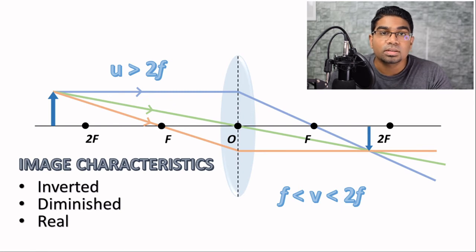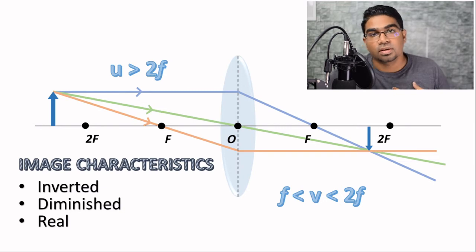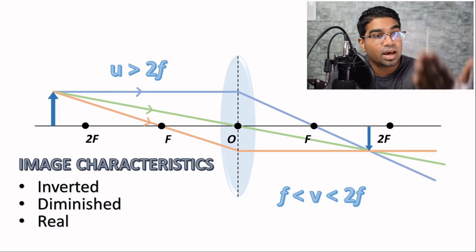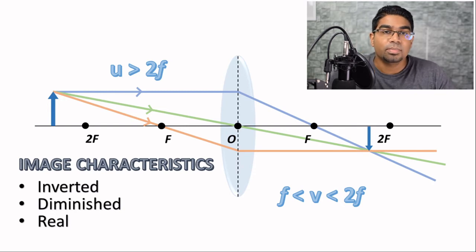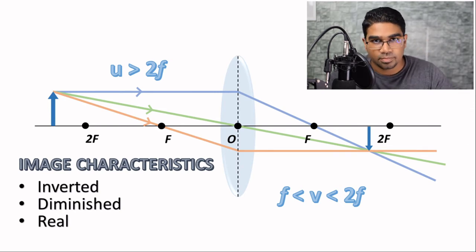A virtual image is like the image of yourself in a mirror. When you look into a mirror, you see an image of yourself somewhere behind it, but if you were to place a screen behind the mirror, you would not get an image. The image is not really there — our mind only perceives it. It is a virtual image.